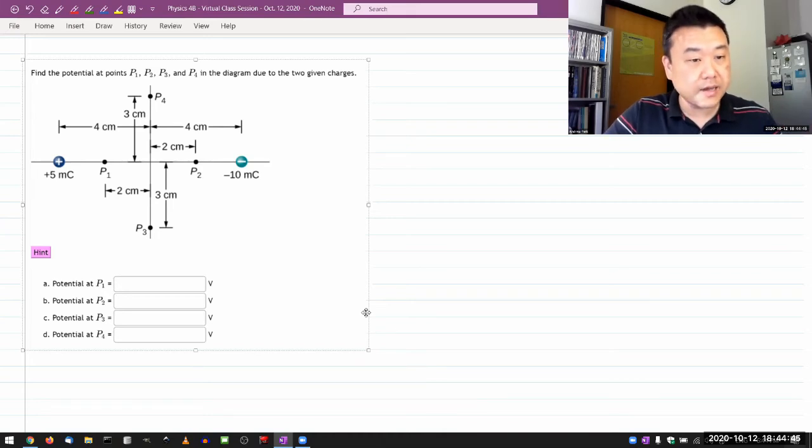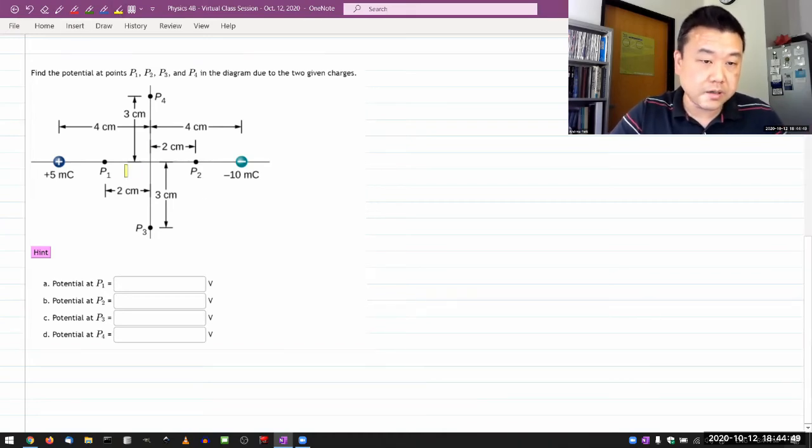So this question says find the potential at this point here, P1, P2, P3, and P4. I want you to highlight that because this is such a busy drawing.